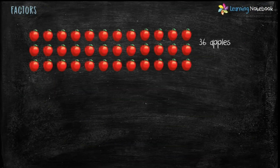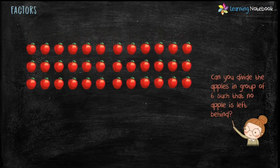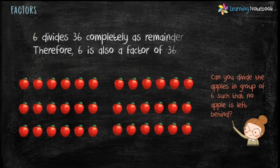Now can we divide these apples in a group of 6 so that no apple is left behind? Let's make groups of 6 apples, and we find that there is no apple left behind. This means 6 divides 36 completely as remainder is 0, therefore 6 is also a factor of 36. So students, factors of a number are the numbers which divide the number completely with remainder equals to 0.